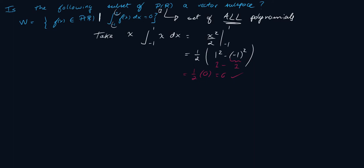Remember what we need to do for our vector subspace proofs. First, we need to show that the zero vector belongs to W. Then we need to show closure under addition — that is, U plus V belongs to W. And then we need to show that cU also belongs to W.